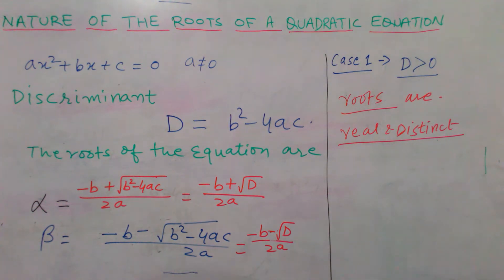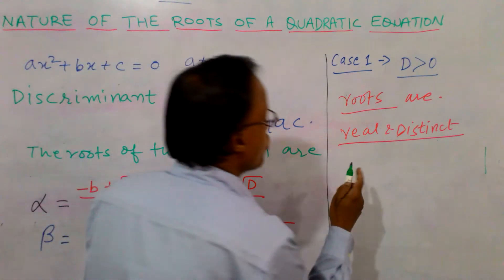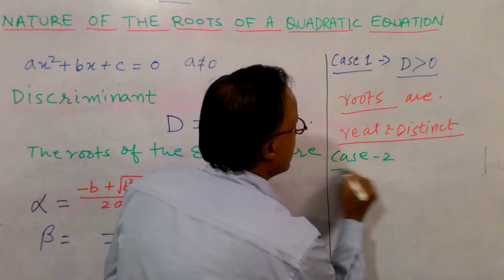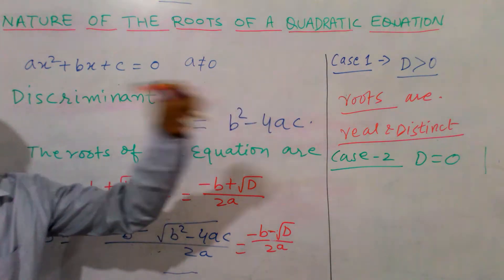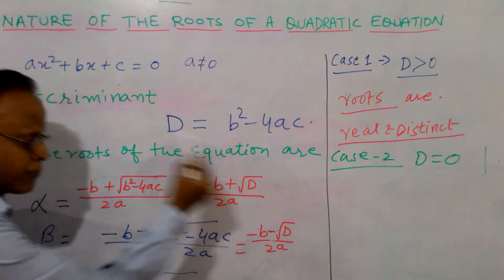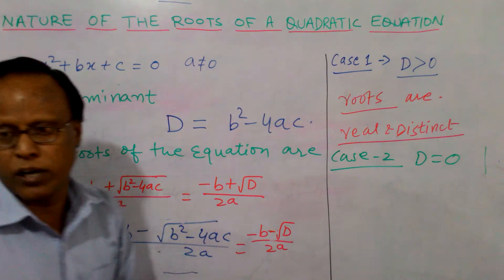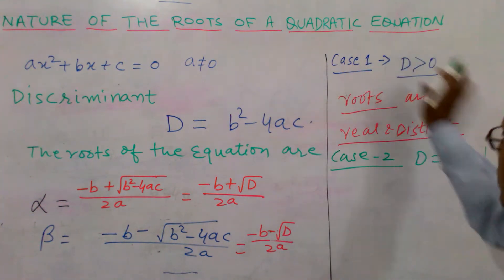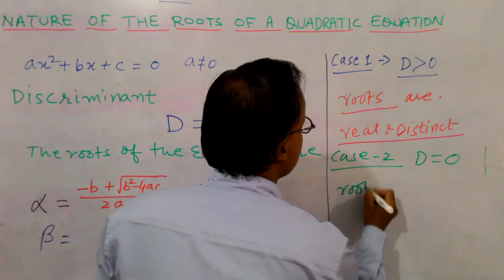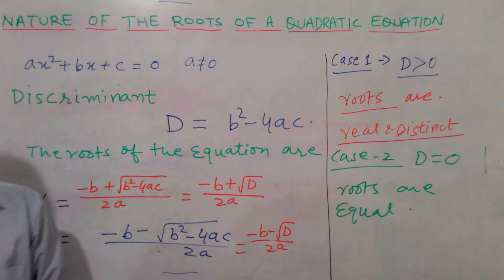Case 2: suppose the discriminant D = 0, meaning b² - 4ac = 0. So this whole factor becomes 0. Therefore, alpha = -b / 2a and beta = -b / 2a. It means the roots are equal. If discriminant equals 0, then the roots of the given equation are equal.